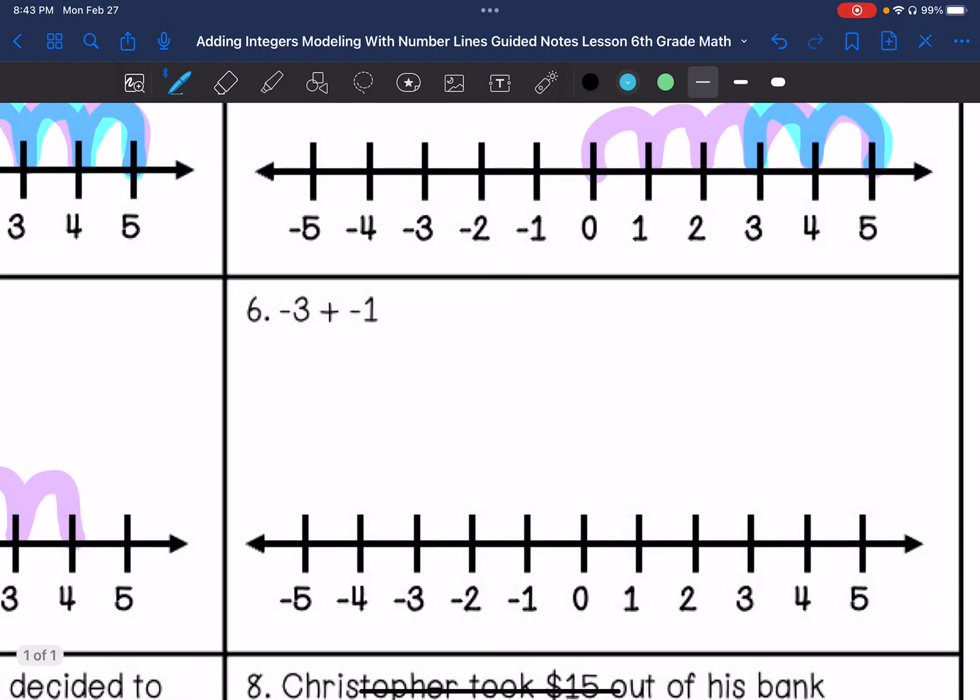Number six: negative three plus negative one. Going to the left three. And then going to the left one more. So my answer is going to be negative four.